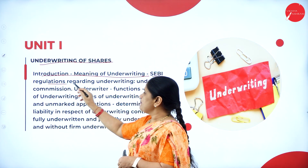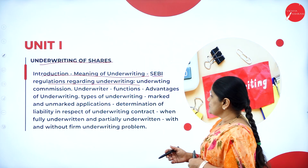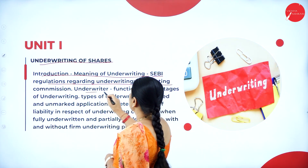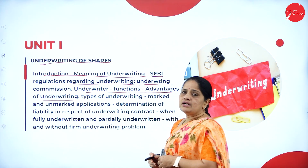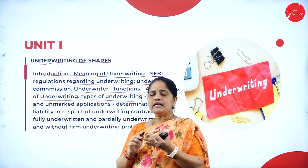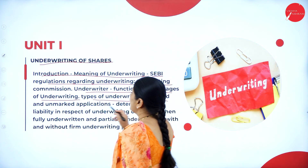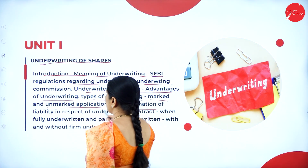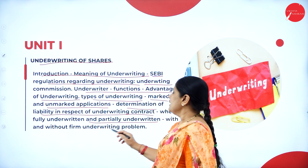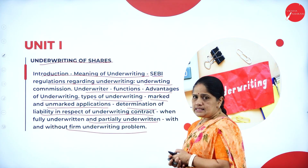We will also be studying about the SEBI regulations regarding underwriting — what are the regulations laid down by SEBI regarding the underwriting of shares. Then underwriting commission: the underwriters are entitled to a commission. Then underwriters' functions and advantages of underwriting. The different types of underwriting include firm underwriting, joint underwriting, partial underwriting, complete underwriting, then marked and unmarked applications, and determination of liability in respect of underwriting contracts when fully underwritten and partially underwritten, with and without firm underwriting problems.